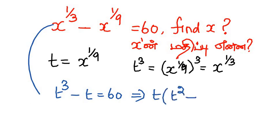Using the difference formula a² - b², this factors as t times (t² - 1), which is t times (t + 1) times (t - 1) equals 60.